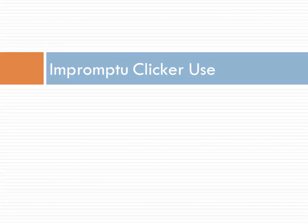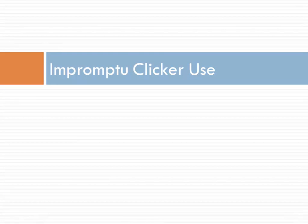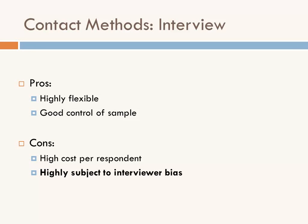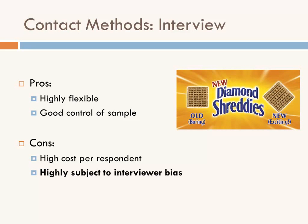A lot of impromptu clicker use emerges as you get traction with the technology. For example, when teaching contact methods and interviewer bias, Jennifer shows a video about diamond-shaped Shreddies versus regular Shreddies — which are actually the exact same product. Before clickers, she'd show the video and then discuss why interview bias occurs. People in the video say things like 'the diamond-shaped one is punchier' despite there being no actual difference.